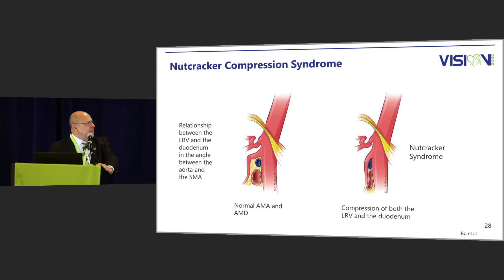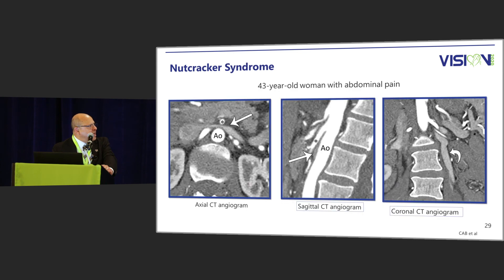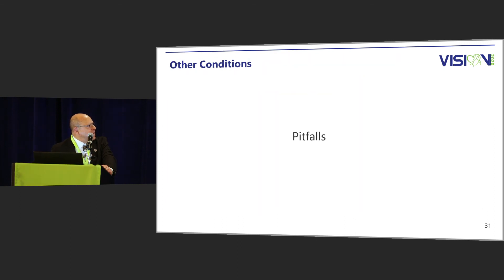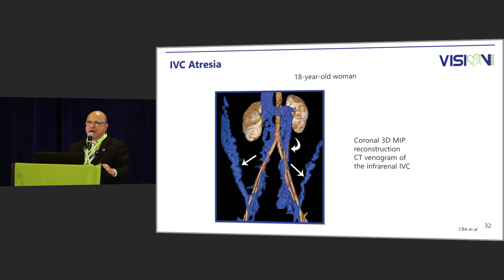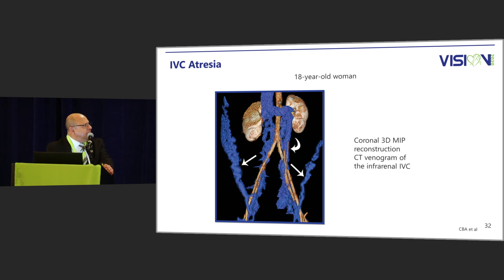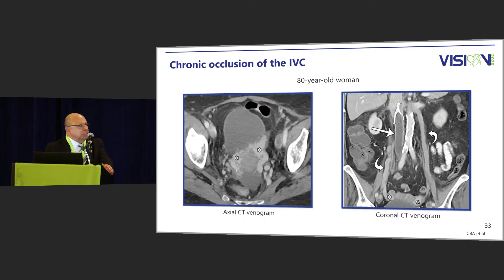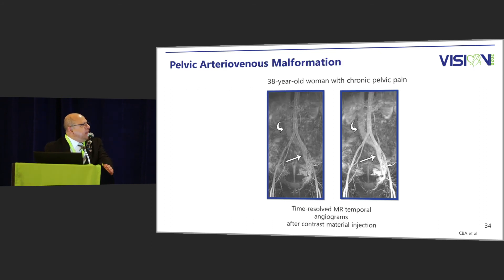Nutcracker syndrome involves the space between the superior mesenteric artery and the aorta — this is the compressed renal vein and the refluxing left gonadal vein. Some pitfalls to keep in mind: an 18-year-old woman showing hemiazygous and azygous collaterals is a case of IVC atresia. An 80-year-old woman with pelvic veins has a clotted IVC. A 38-year-old woman showing pelvic collaterals with early IVC filling indicates a pelvic arteriovenous malformation.